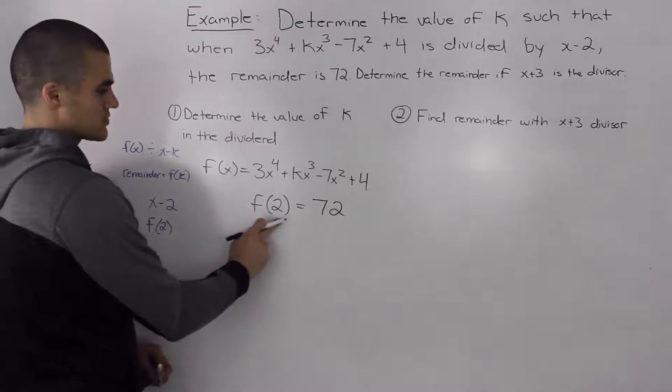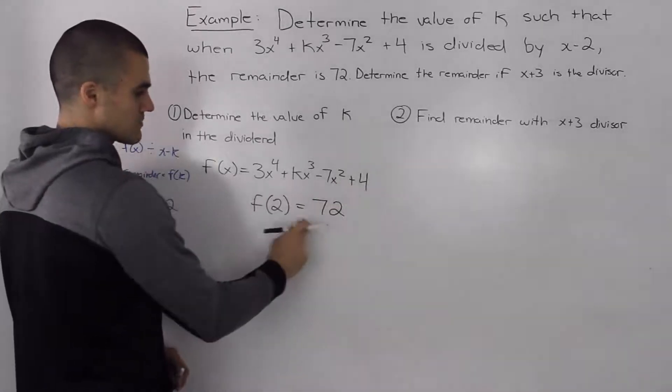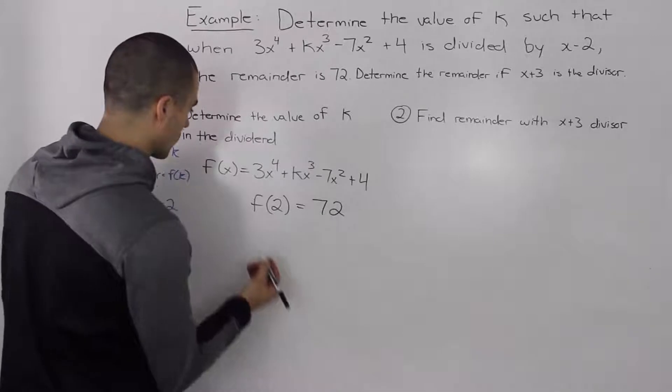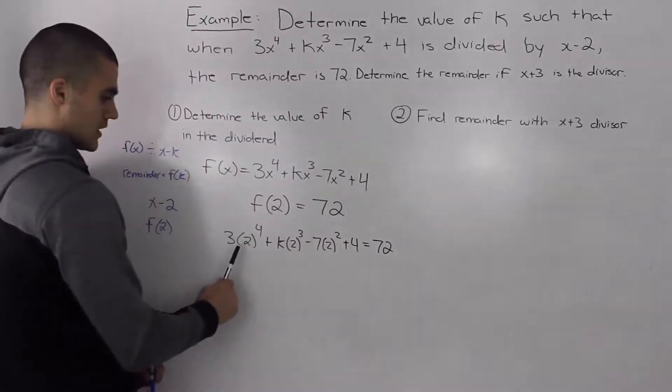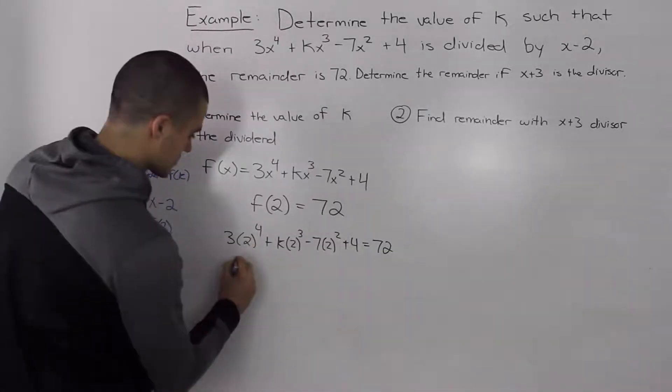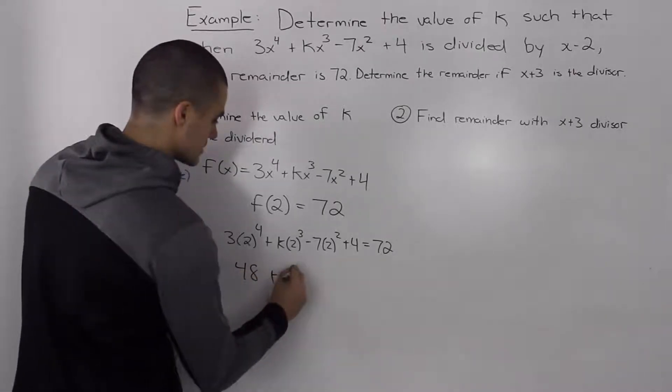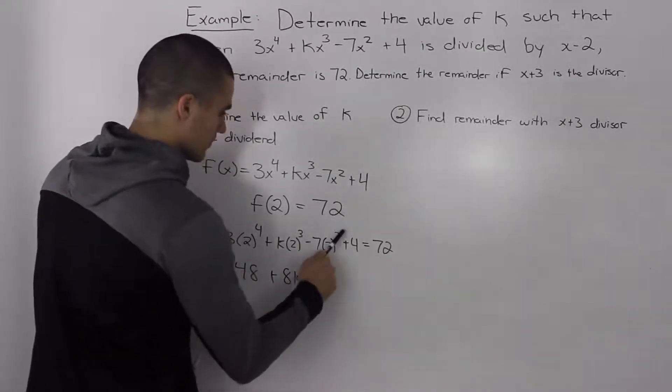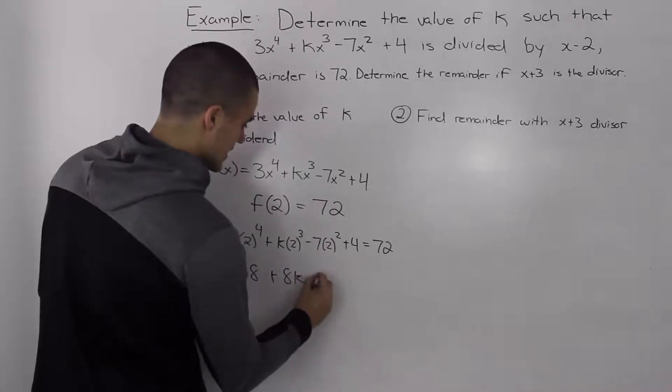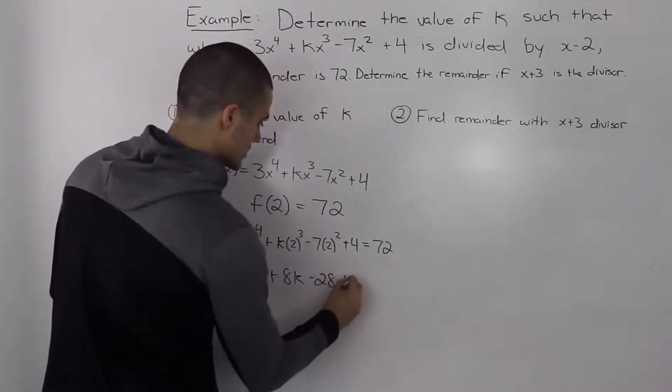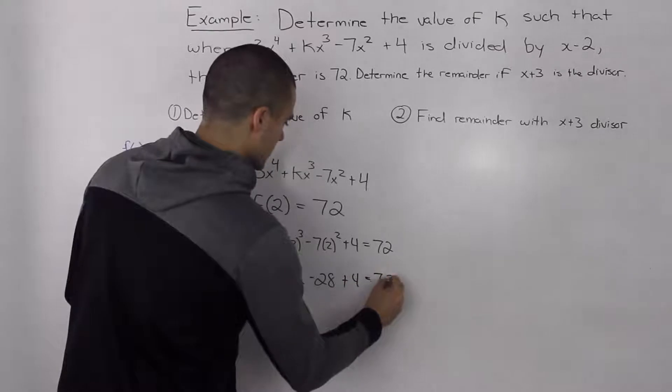So all we have to do is plug in 2 for all the x values, make it equal to 72 and then we just solve for k. So 2 to the power of 4 is 16 times 3 is 48, 2 to the power of 3 is 8, 2 to the power of 2 times 7 is negative 28, plus 4 equals 72.